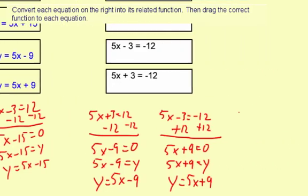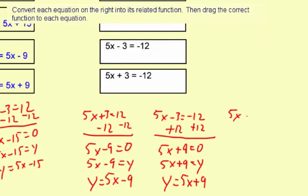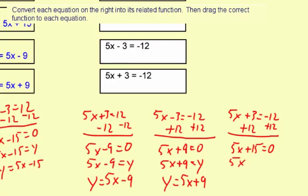Then the fourth one, 5x plus 3 equals negative 12. You need to add 12 to both sides. You get 5x plus 15 equals 0. Substitute the y in. 5x plus 15 equals y. And then proper function form, the y goes first. y equals 5x plus 15.